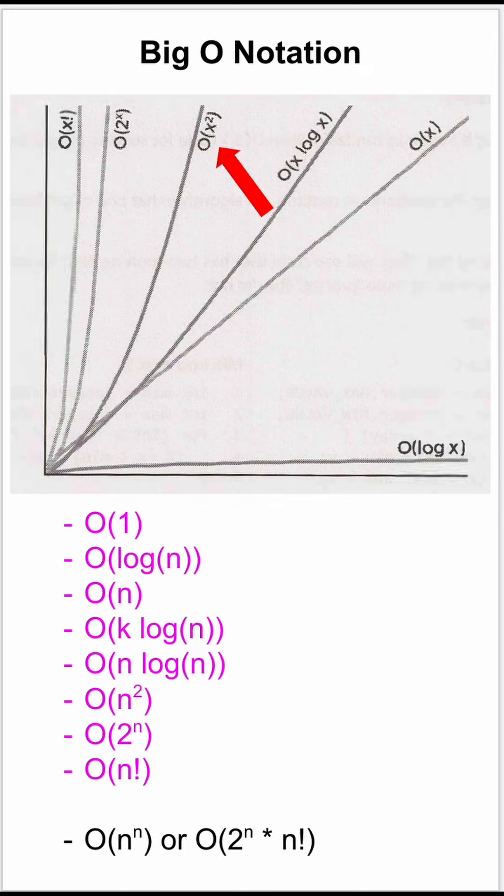but O(2^n) and O(n!) are much worse than O(n²). We'll see a deep dive of each of these notations in later videos, so subscribe and like to see more content like this.